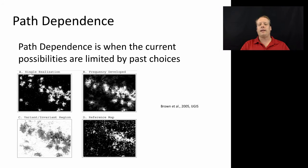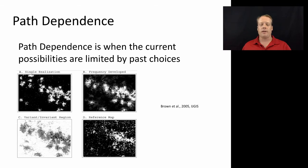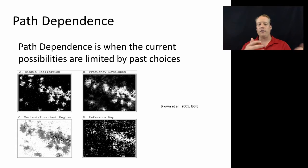That's related to the notion of path dependence. Path dependence is the idea that the current possibilities are limited by the past choices. So once you've encouraged people to develop to the south, it's much less likely that you're going to see development to the north, because urban development is a path-dependent process — a process where people like to build near where people have built before.